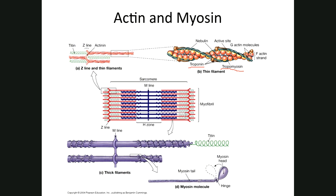Myosin looks like a little golf club with two heads — those heads are called cross bridges. Myosin filaments are thick because many myosin molecules are bundled together, with their heads directed out to the sides of the bundle. So the thick myosin bundles are surrounded by thin actin filaments (double helix with troponin and tropomyosin), and the actin filaments extend all the way to the Z-lines, which are also made of actin.